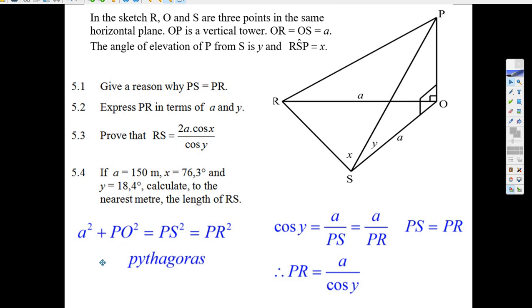But if you square those two sides, you get PS squared, and you get PR squared, you get exactly the same thing. So by Pythagoras, PS must equal PR.